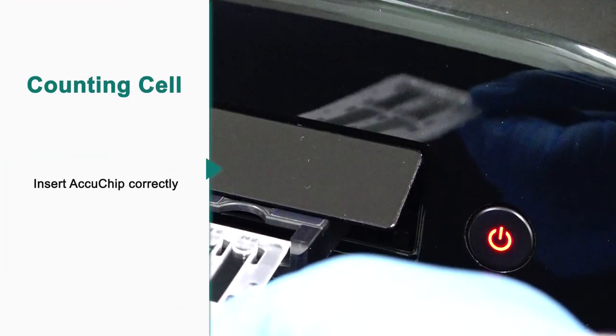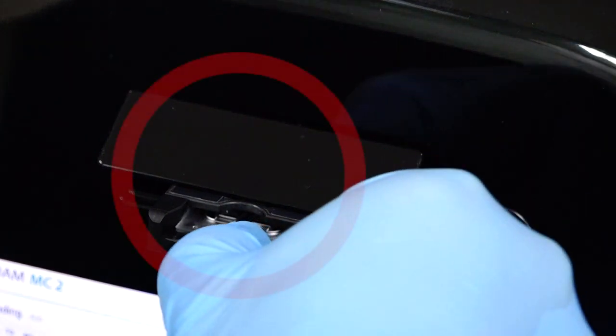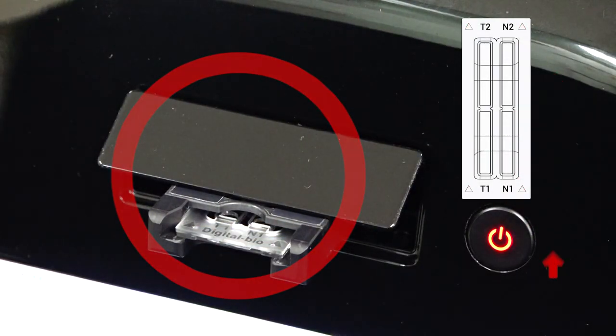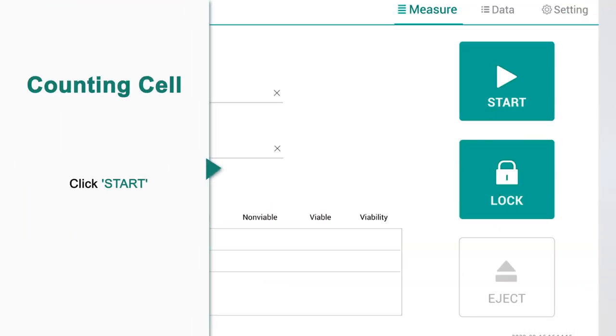Fourth, cell counting. Insert the slide into Adam MC2 correctly, then click the start button on the measure tab of Adam MC2.